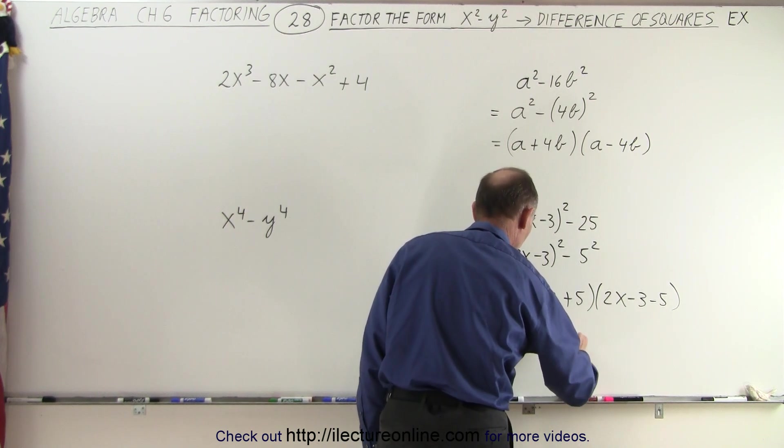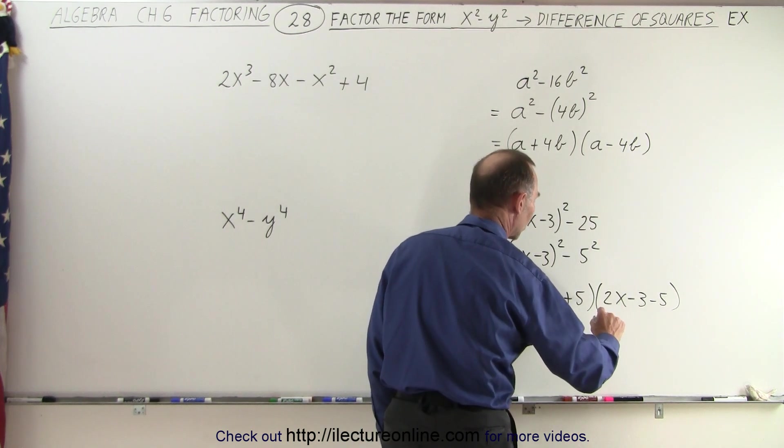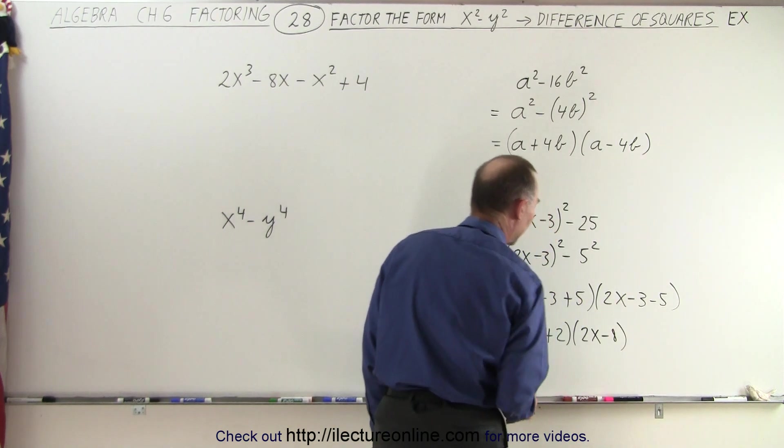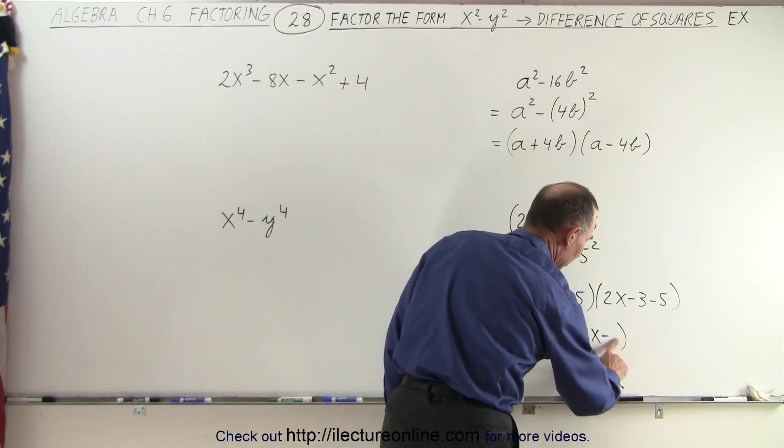This can then be written as 2x minus 3 plus 5, which would be 2x plus 2 times the quantity 2x minus 8. Let me try that again.